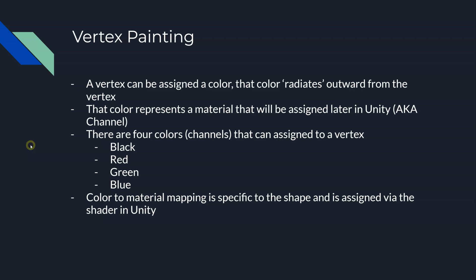What you assign to that vertex can bleed over but not take up the entire triangle. That color we paint the vertex represents a material, and that material is later assigned in Unity — we're going to call these channels. You can vertex paint up to four colors or four channels: black, red, green, or blue. There is no other option, and there's no blending — you can't paint a combination of black and red; it gets painted black or it gets painted red.